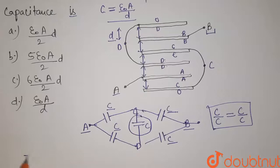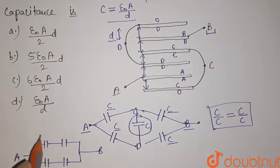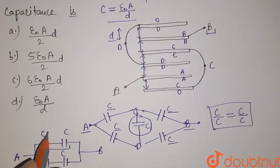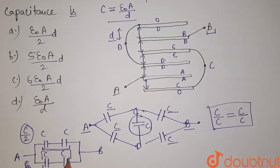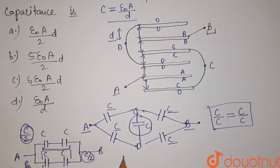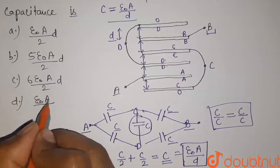So our circuit will look like this: one capacitance, second capacitance, third and fourth, between points A and B, all with capacitance C. These two capacitances are in series, so their equivalent is C by 2. These other two are also in series, giving C by 2. Now these two C by 2 are in parallel, so total capacitance equals C by 2 plus C by 2, which equals C. Since C equals epsilon naught A divided by D, option D — epsilon naught A divided by D — is our correct answer.